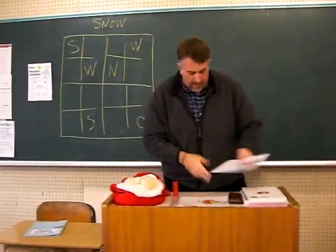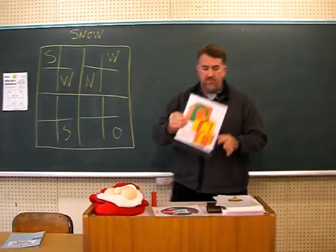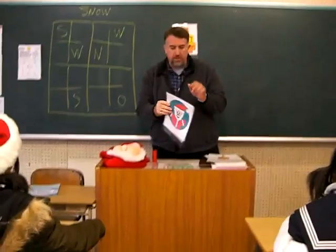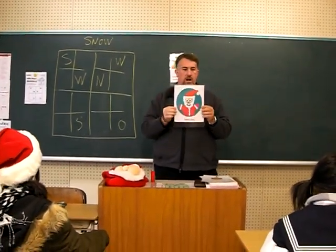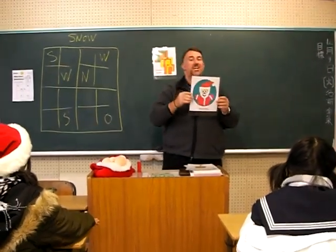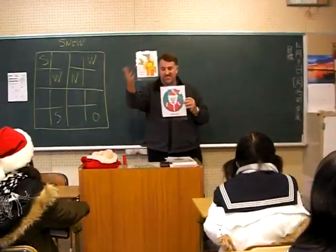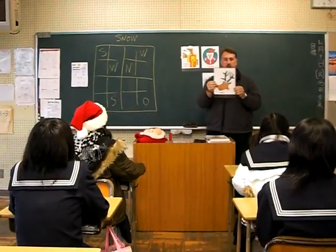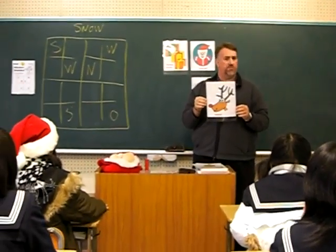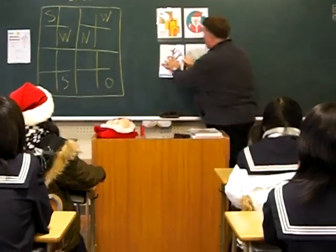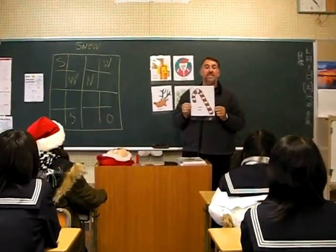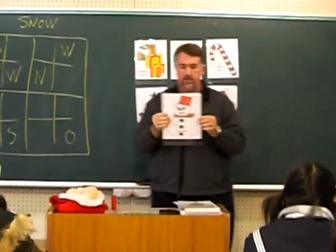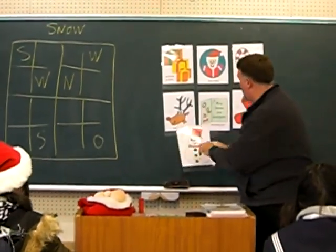I'm going to show you three simple games — they involve flashcards. So we have: presents, Santa Claus, Christmas card, reindeer — they don't really know Rudolph, but they know 'tonakai' — reindeer. Candy cane, Christmas stocking, snow, snowman, Christmas tree, and ornament. You have your students repeat each word. I put little magnets on the back so they stick right away. You can make your flashcards anything.